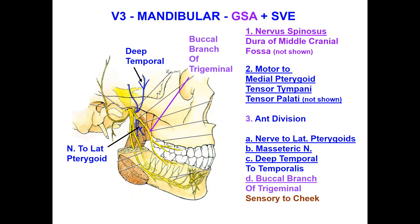The mandibular division here: it has general sensation as we said, and special visceral sensation. The first branch is the nerve spinosus to the dura of the middle cranial fossa. Motor to the medial pterygoid, tensor tympani, and tensor veli palatini.